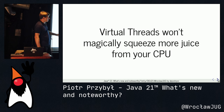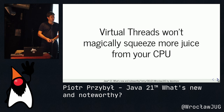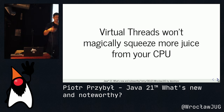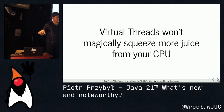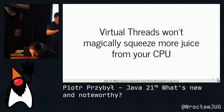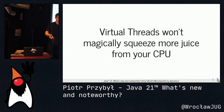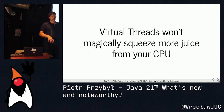This might be one of the most important slides in this talk: virtual threads won't magically squeeze more juice from your CPU. If you have a regular single-thread batch operation, it won't run faster just because you switch to a virtual thread — there is no CPU gain. The gain is when you have to wait for something, usually IO — you don't waste CPU cycles waiting. If you have heavy IO or heavy network, switching to virtual threads makes sense.